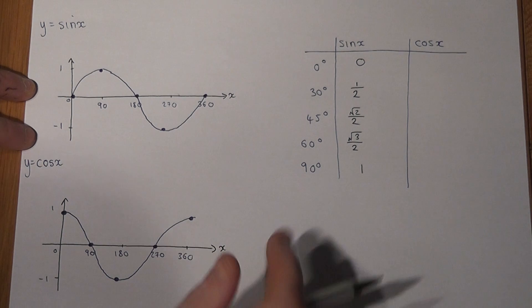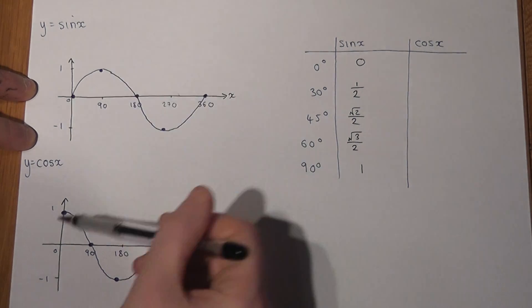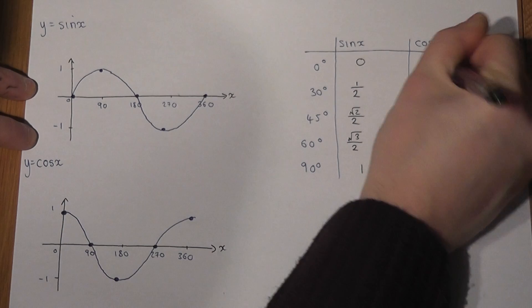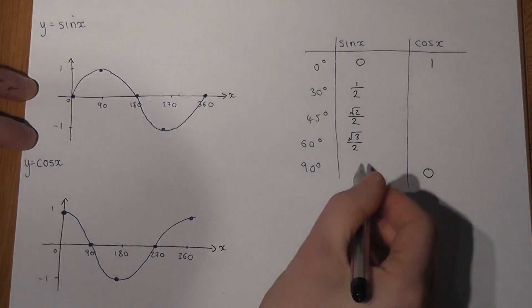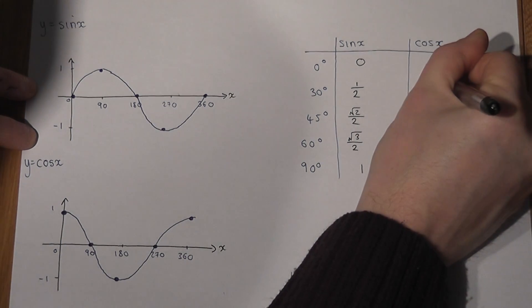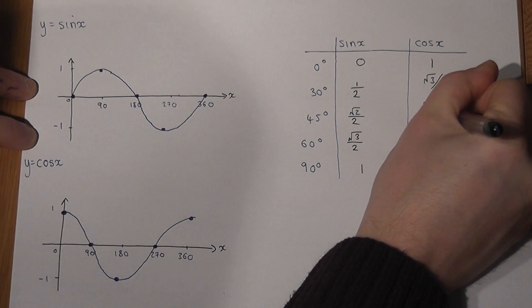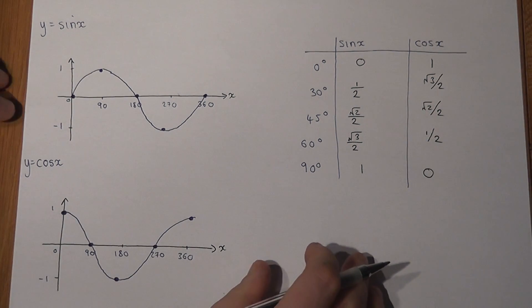Now the nice thing here is that cos is almost the same, it just goes backwards. So where sine goes up, cos goes down. So cos starts at 1 and ends at 0. Then we just write in these key values the other way: 1, root 3 over 2, root 2 over 2, and a half.